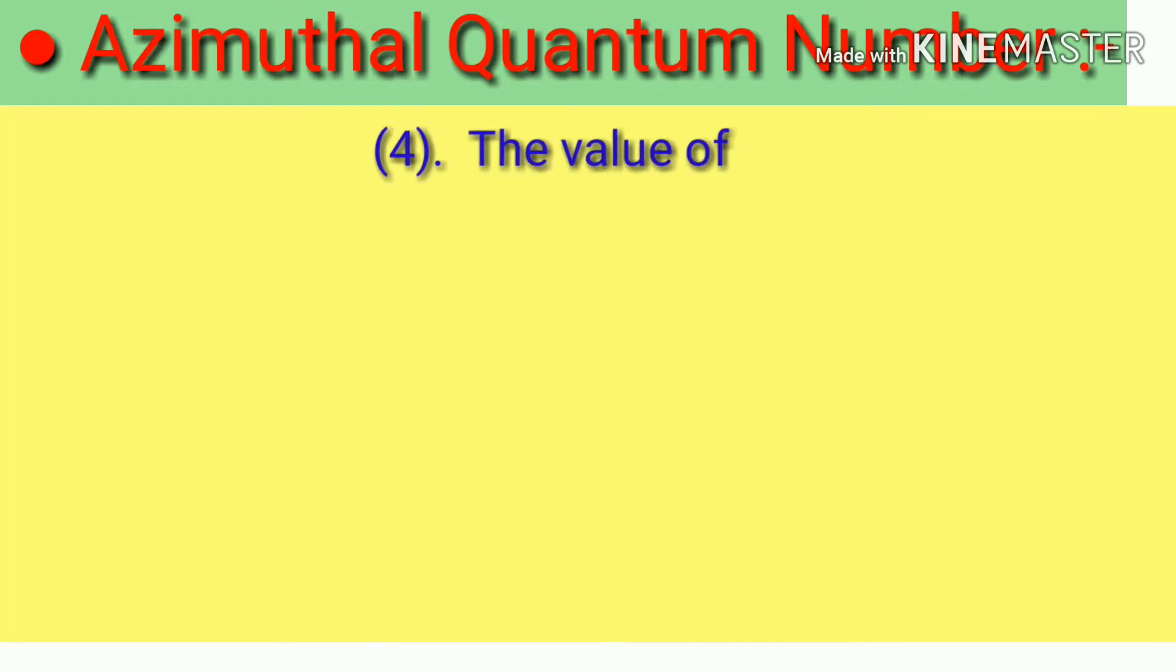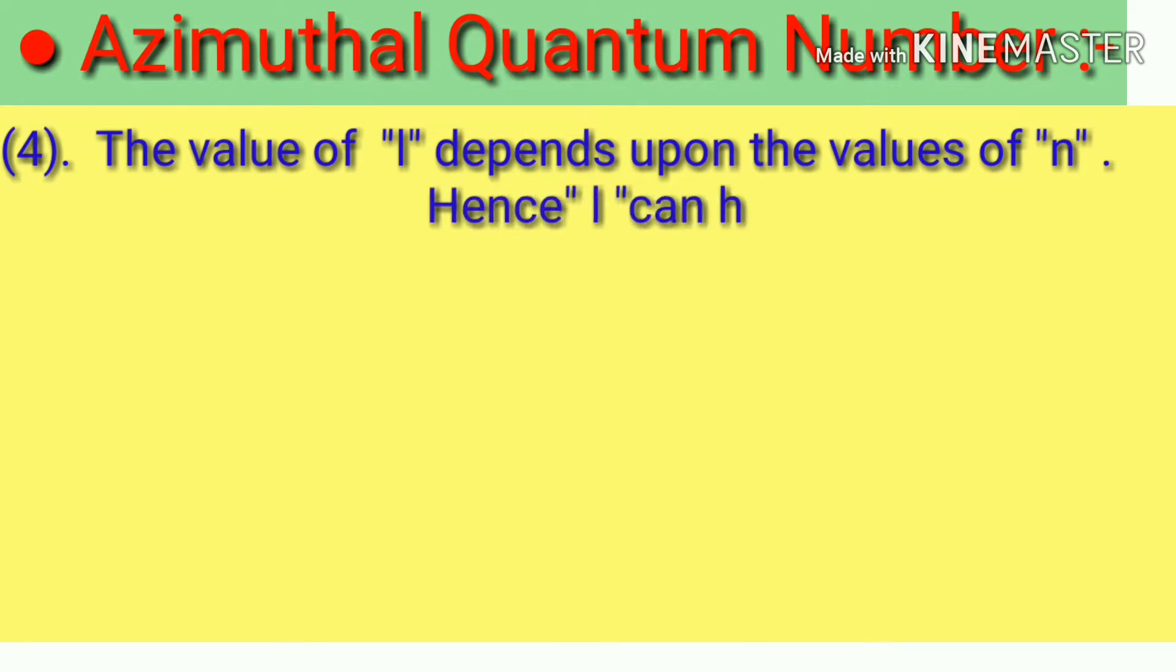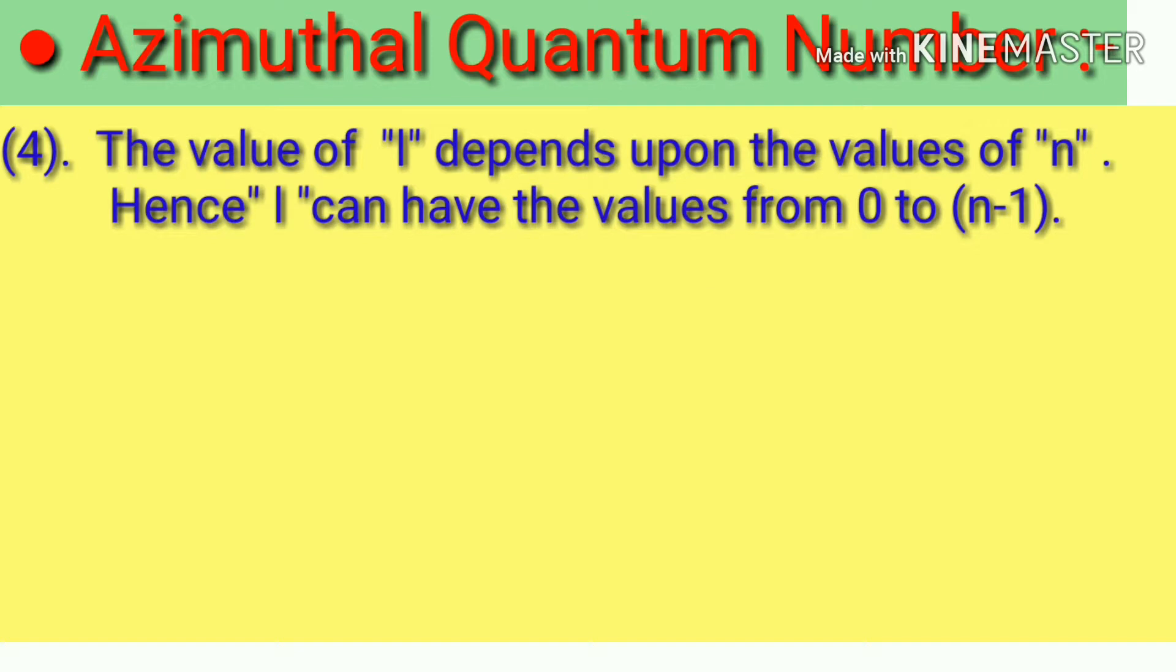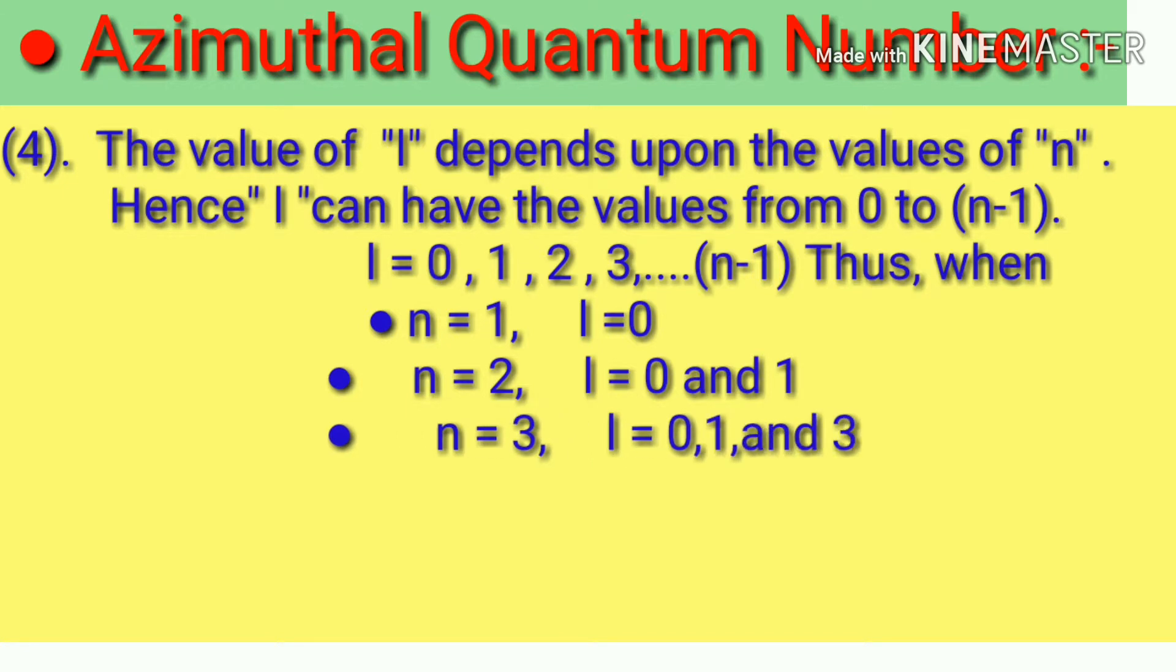The value of L depends upon the values of N. Hence L can have the values from 0 to N-1. L equals 0, 1, 2, 3, N-1. Thus, when N equals 1, L equals 0. N equals 2, L equals 0 and 1. N equals 3, L equals 0, 1, and 2. Equals S, P, D, F orbitals.